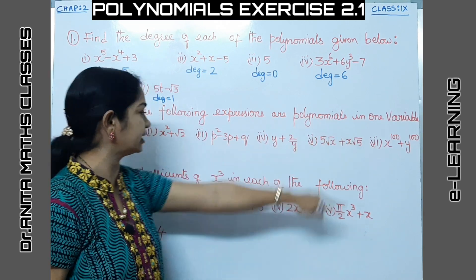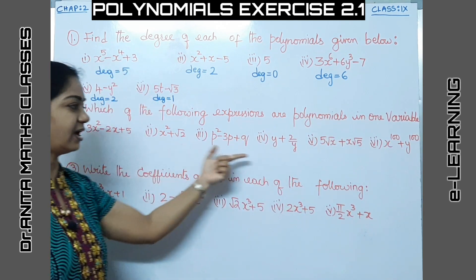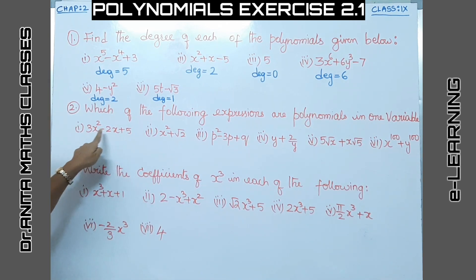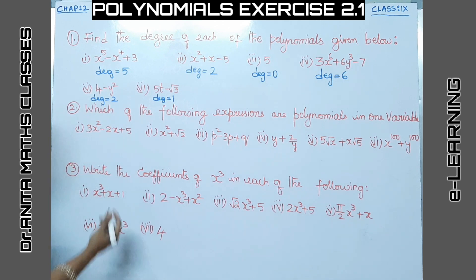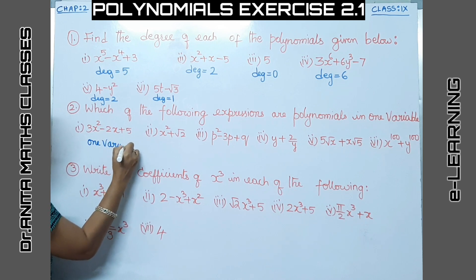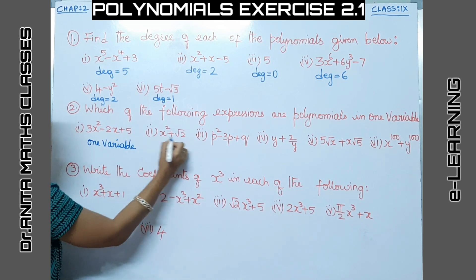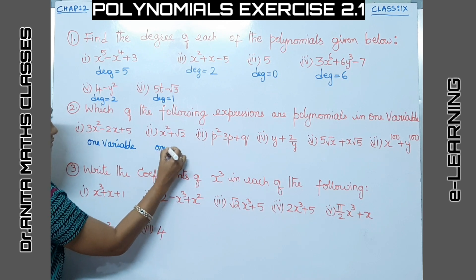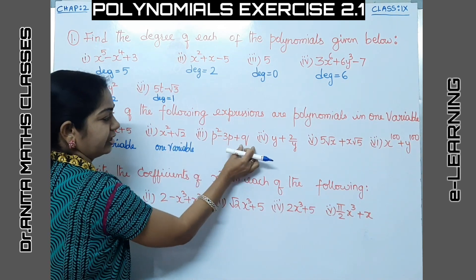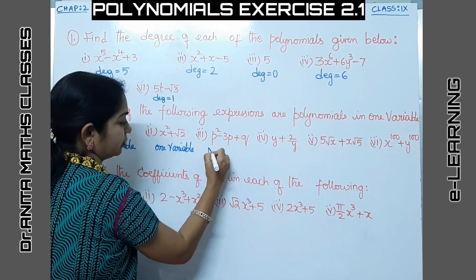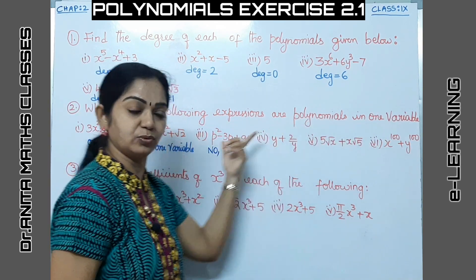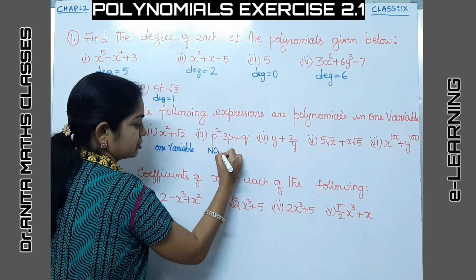The second problem: which of the following expressions are polynomials in one variable? We have to identify polynomials with only one variable. The first expression has only x throughout — it is a one-variable polynomial. The next also has only x as the variable. However, one expression has two variables, p and q, so that is not a polynomial in one variable.